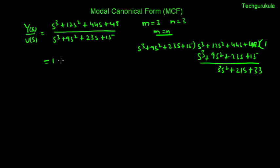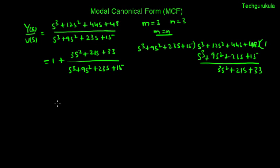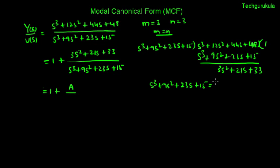So this transfer function can be rewritten as 1 plus (3s² + 21s + 33) over (s³ + 9s² + 23s + 15). For the second term we need to find the partial fraction form. The denominator polynomial s³ + 9s² + 23s + 15 factors as (s+1)(s+3)(s+5), since those are the known roots.